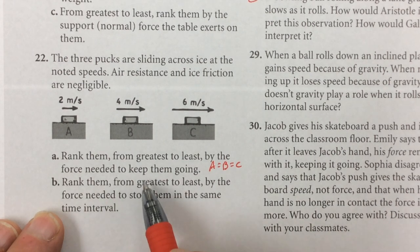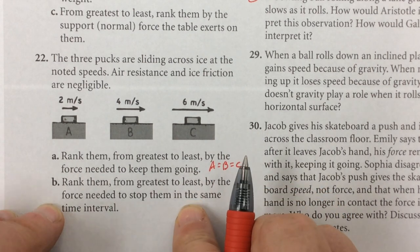Number B says, rank them from greatest to least by the force needed to stop them. Okay. Now that's a different question.